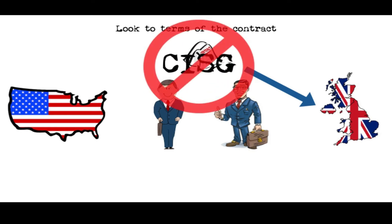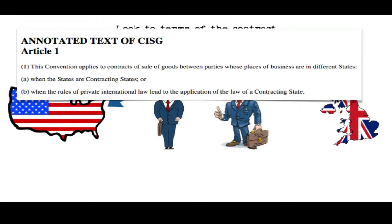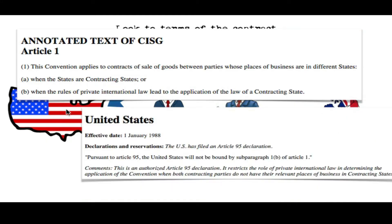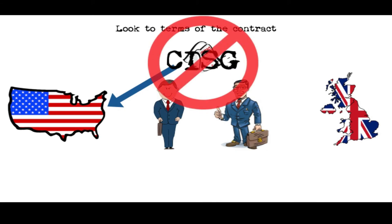If, however, the contract says that US law applies, because the US is a member, the treaty could apply here — and 'could' is a key word. What does it depend on? Well, as with all treaties, we have to look to what the states actually agreed to when they signed the treaty. And what we find is that when the United States signed the treaty, they entered a reservation saying that under US law, both countries must be members for the CISG to apply. So the CISG would not apply in this sale, or in any sale between a US resident and the resident of a non-member state.